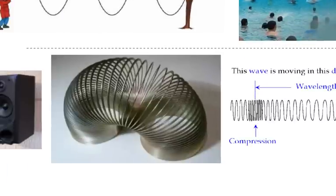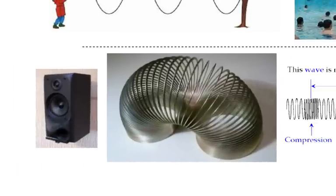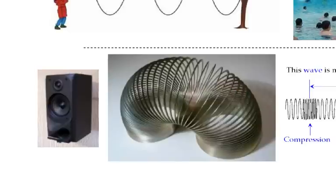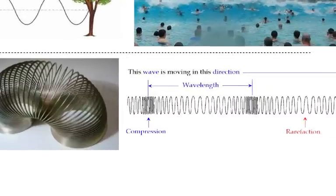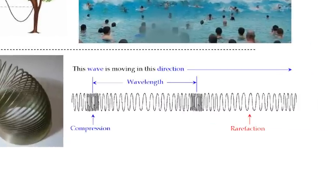All right, so what then is an example of a longitudinal wave? Well, sound is a longitudinal wave and slinkies can be used to produce longitudinal waves as well. That's pretty much it. When you make a longitudinal wave in a slinky, this is what it looks like. There are parts that are squished and parts that are spread out.